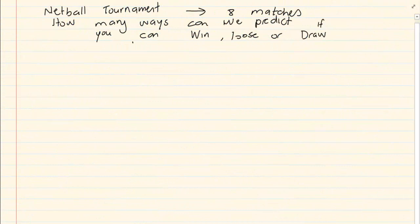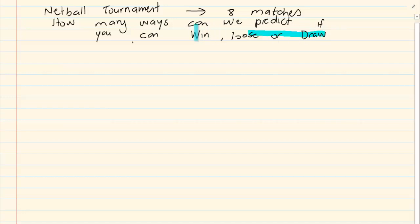Let's say there is a netball tournament. For this tournament there are going to be 8 matches. How many ways can we predict if you can win, lose or draw? So how many options are there? We know that for every match there are 3 options.